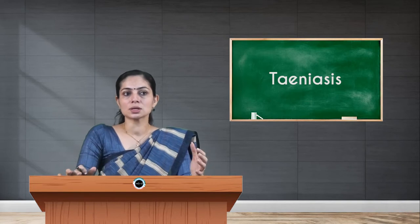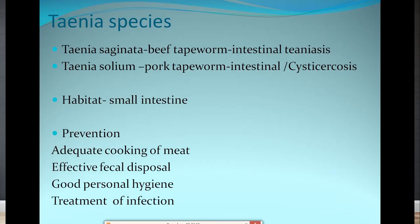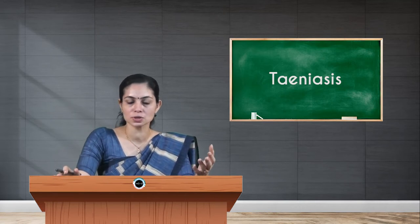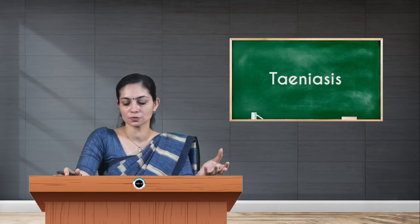Coming to the Taenia species, we are going to talk about two different species: Taenia saginata and Taenia solium. Both these species can lead to intestinal taeniasis, whereas in Taenia solium you also find another infection named cysticercosis. Both parasitic infections can be prevented by adequate cooking of meat, effective fecal disposal, good personal hygiene, and immediate treatment for the infection.